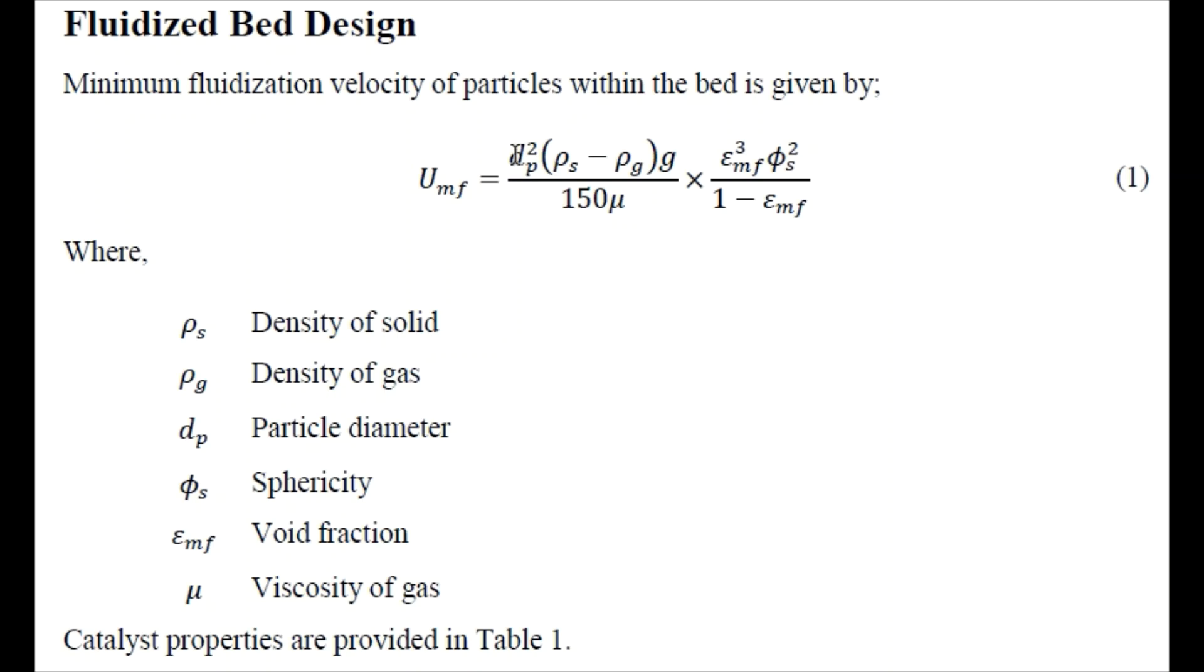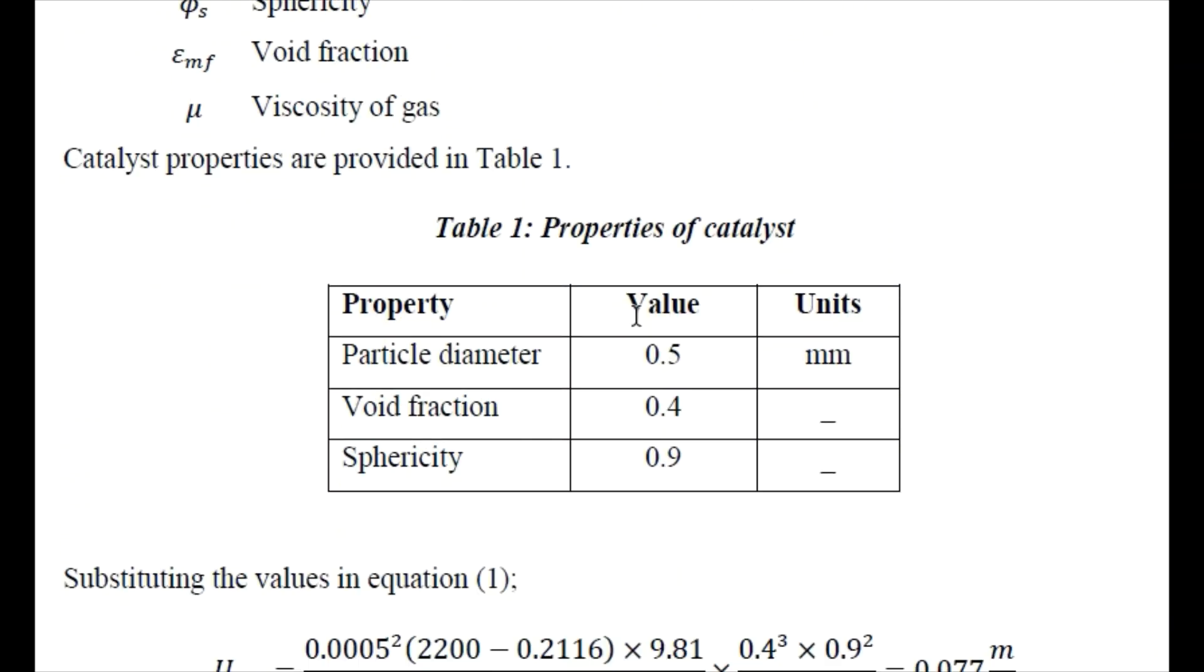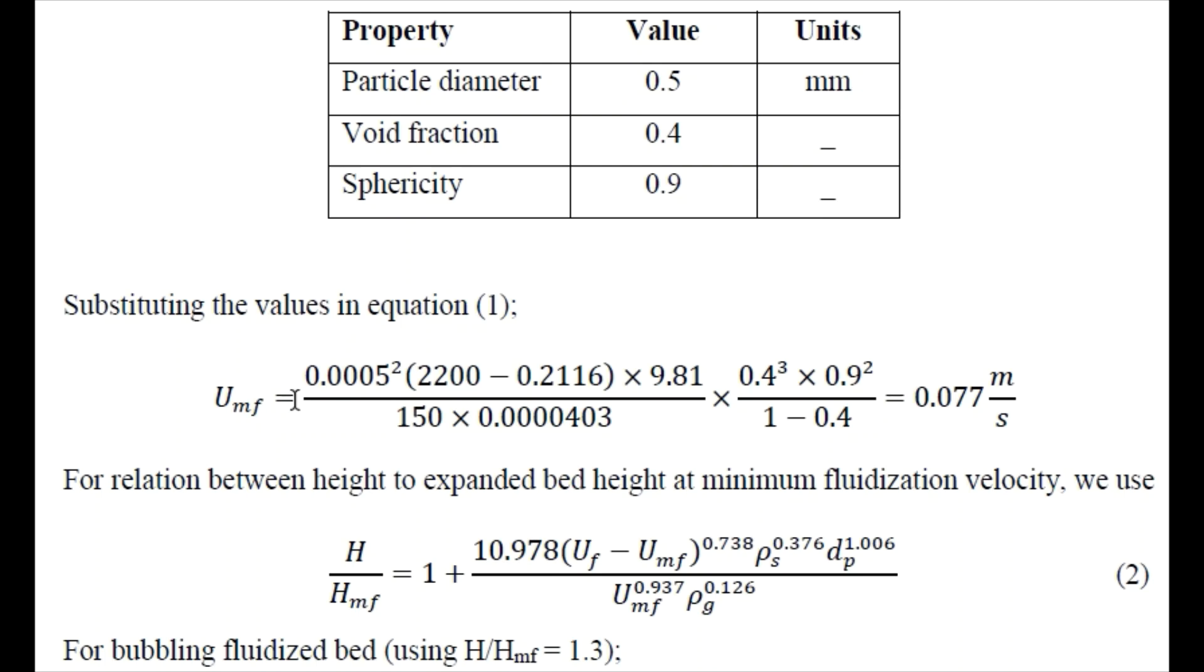This is particle diameter, density of the solid, density of gas, gravitational constant, minimum void fraction, sphericity, and viscosity. We have taken the parameters for solid which is involved in the bed: particle diameter is 0.5 mm, void fraction is 0.4, sphericity is 0.9. Substituting these values in equation number one we can find the minimum fluidization velocity that comes out to be 0.077 meter per second.